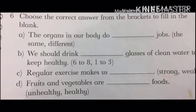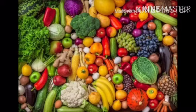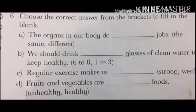Part D: fruits and vegetables are dash foods. The options are 'unhealthy' and 'healthy'. Fruits and vegetables are healthy for us. The correct option is healthy. Write healthy in the blank.